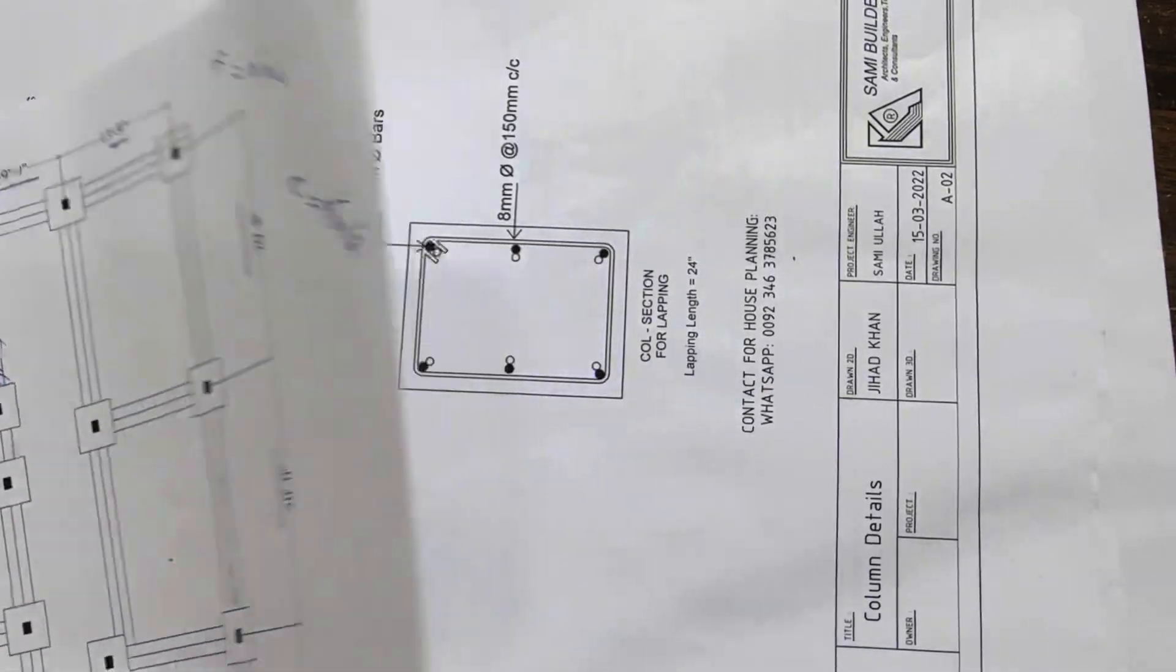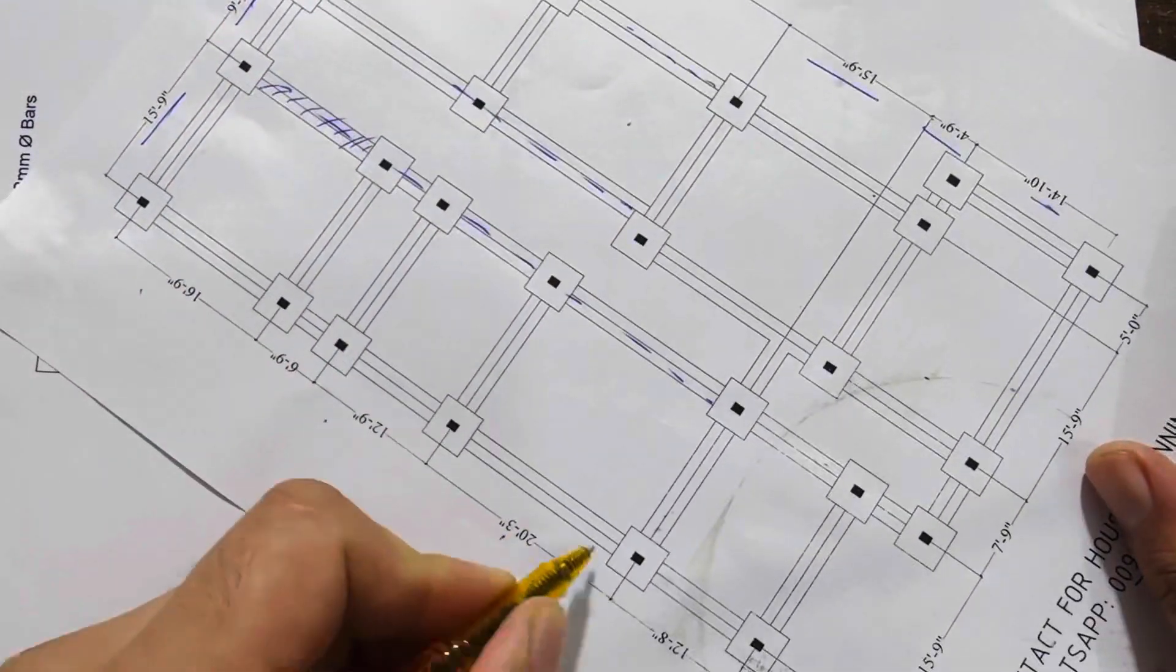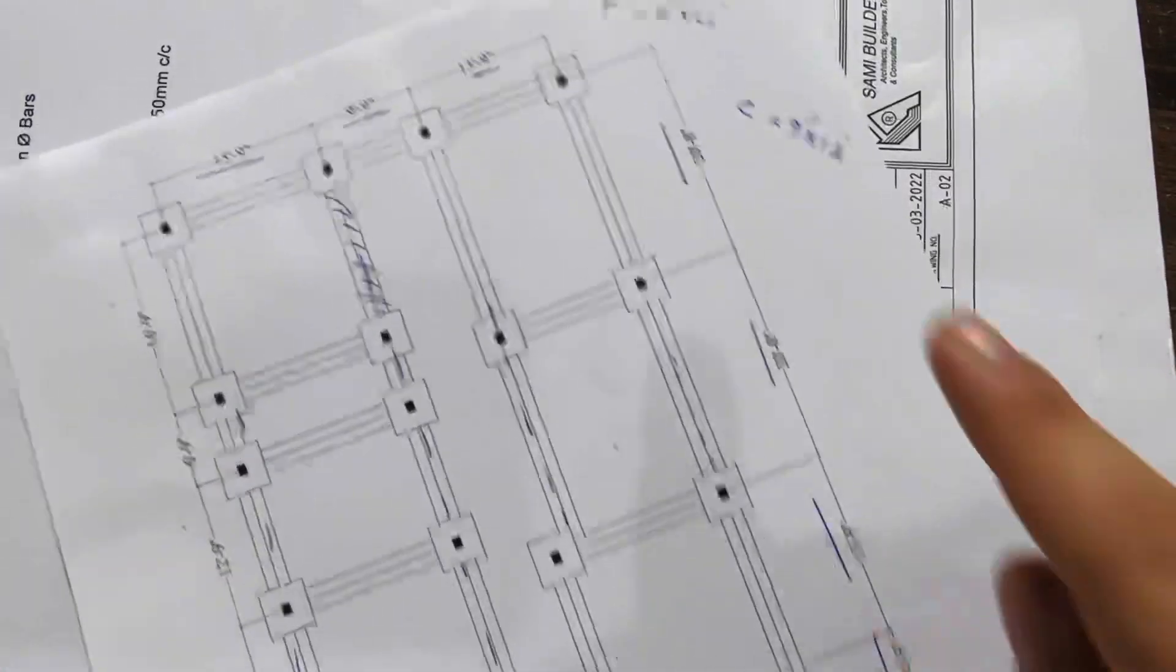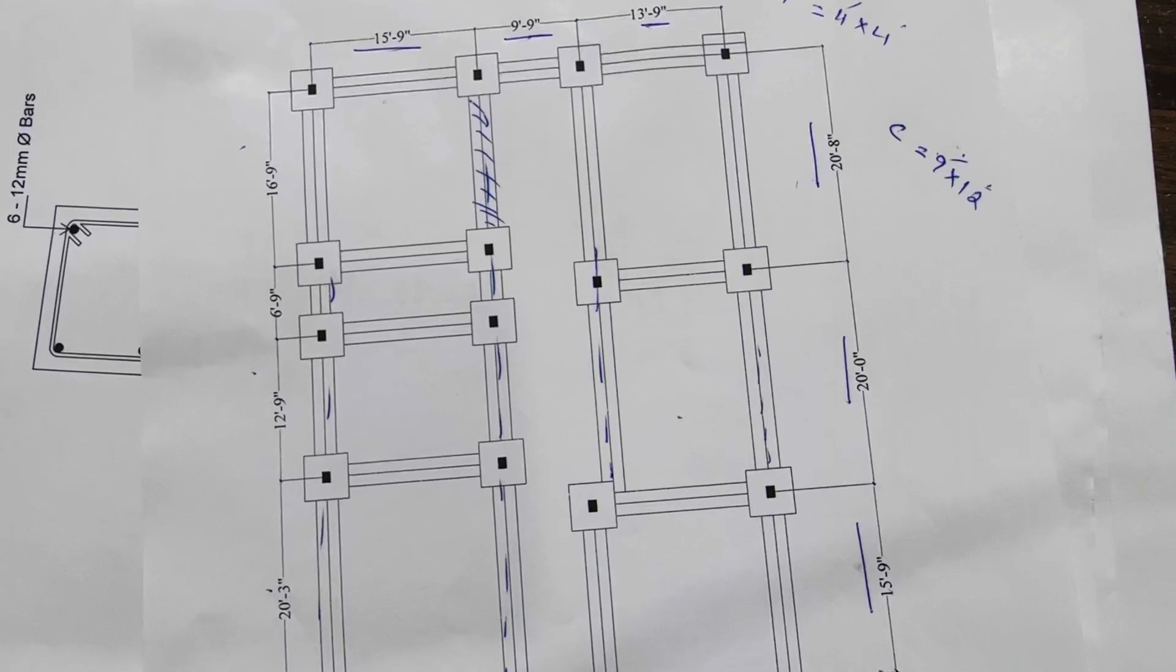The column size is 9 by 12 inches. You can see clearly these are centerlines. This is the size of footing: 4 by 4 feet.